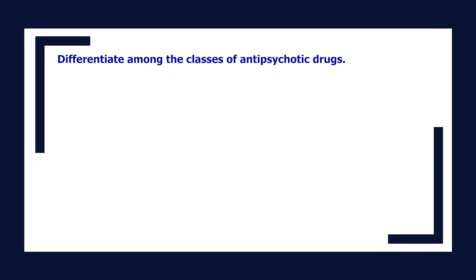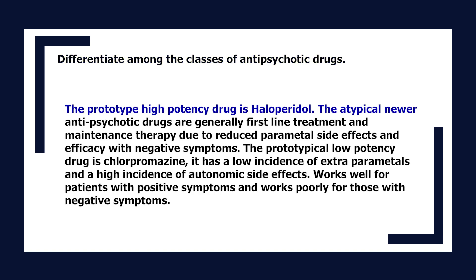Differentiate among the classes of antipsychotic drugs. The prototype high-potency drug is haloperidol. The atypical newer antipsychotic drugs are generally first-line treatment and maintenance therapy due to reduced extrapyramidal side effects and efficacy with negative symptoms. The prototypical low-potency drug is chlorpromazine — it has a low incidence of extrapyramidal effects, a high incidence of autonomic side effects, works well for positive symptoms, and poorly for negative symptoms.